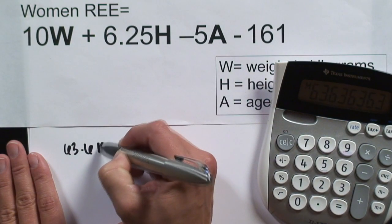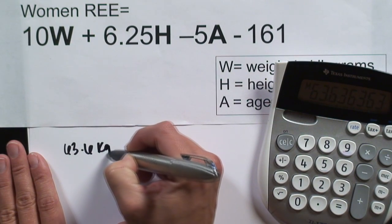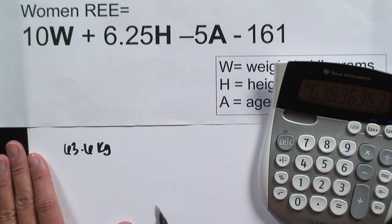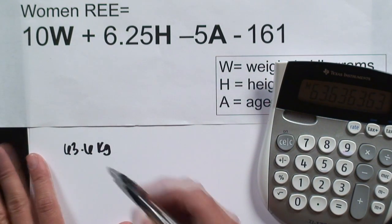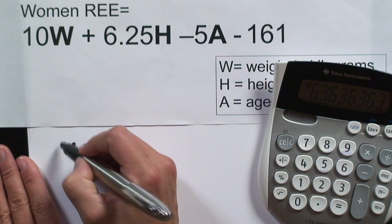I used Mifflin-Saint-Geor here, but you can also use the Harris Benedict, or go online to an accredited source that has a resting energy expenditure calculator. That's just a little bit of information on how you calculate your daily calorie needs. I'm Charlotte, and eat happy.